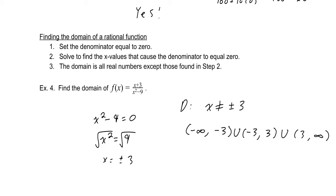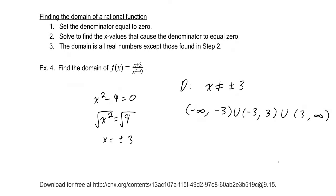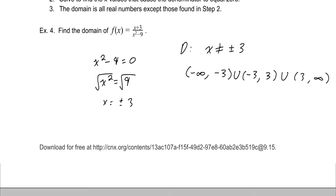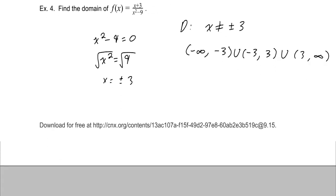There are actually two types of domain restrictions. One is called a hole — a removable discontinuity — and the other is a vertical asymptote, which we've already seen. We'll see how these actually classify from another example.